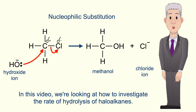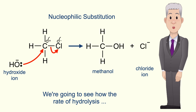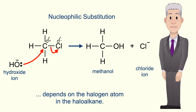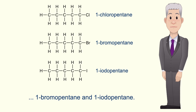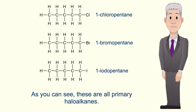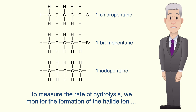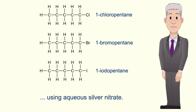Now in this video we're looking at how to investigate the rate of hydrolysis of haloalkanes. We're going to see how the rate of hydrolysis depends on the halogen atom in the haloalkane. We're going to compare the rate of hydrolysis of 1-chloropentane, 1-bromopentane, and 1-iodopentane. As you can see, these are all primary haloalkanes. To measure the rate of hydrolysis we monitor the formation of the halide ion using aqueous silver nitrate.